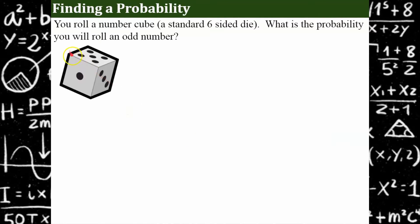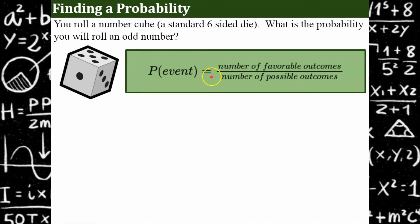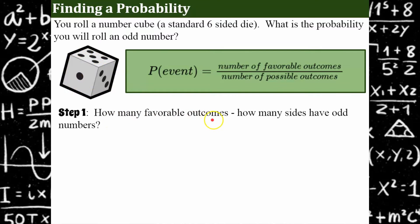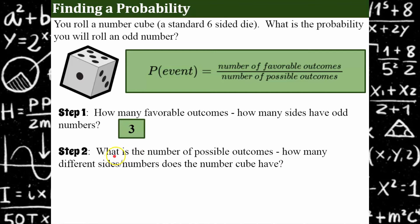Now let's look at this. We have our standard number cube, but now we're going to find the probability of rolling an odd number. That's our event. We want to find how many favorable outcomes there are — how many sides of the six-sided die have odd numbers. They are one, three, and five: three different sides with odd values. Our denominator is how many possible outcomes there are when we roll the die — six different sides.